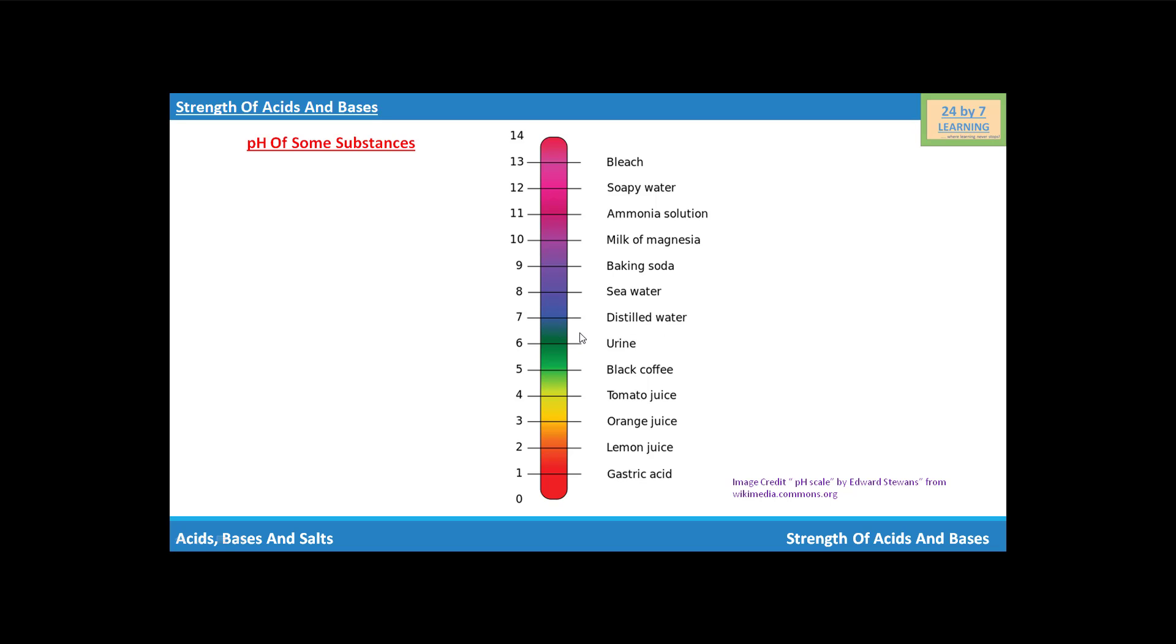As we are going down in the pH scale, we will see that urine will have pH value 6, and black coffee will have pH value 5. Tomato juice will have pH value 4, and orange juice will have pH value 3.